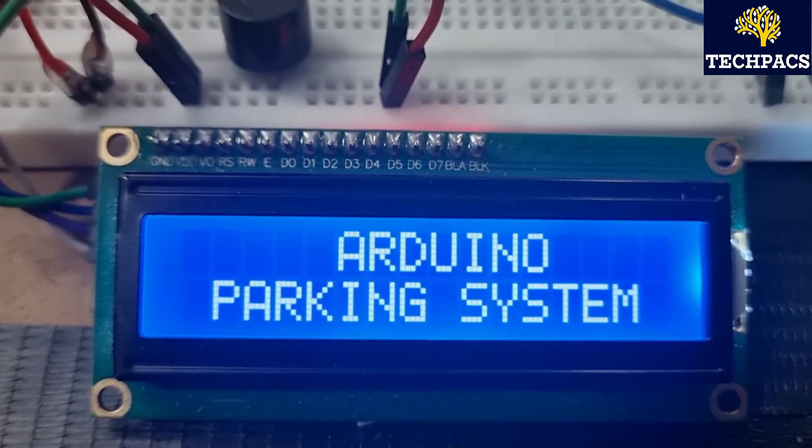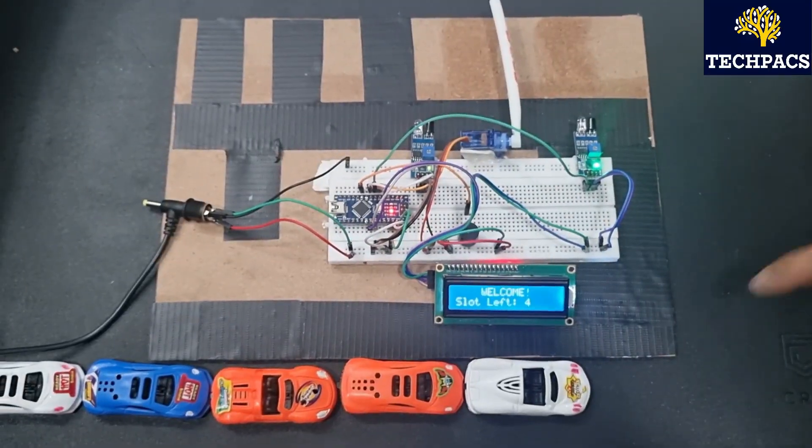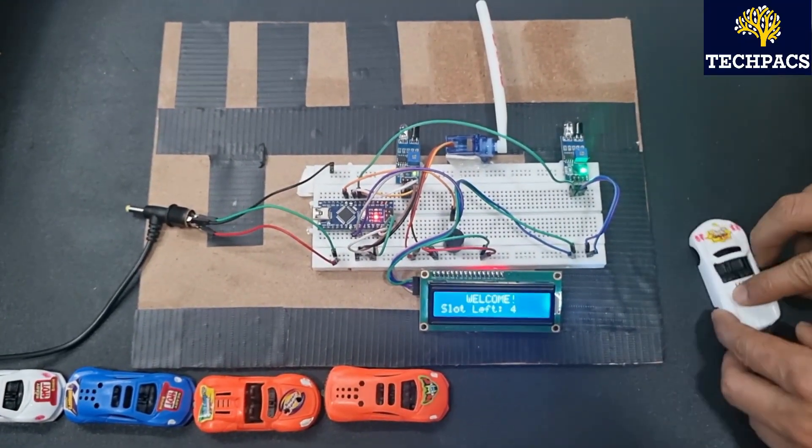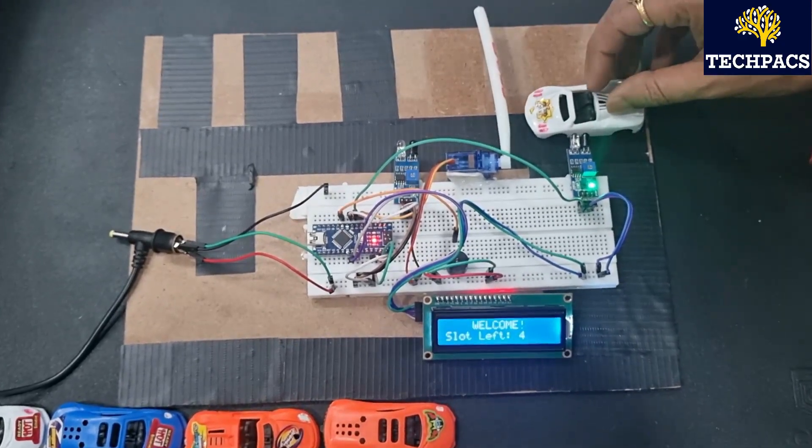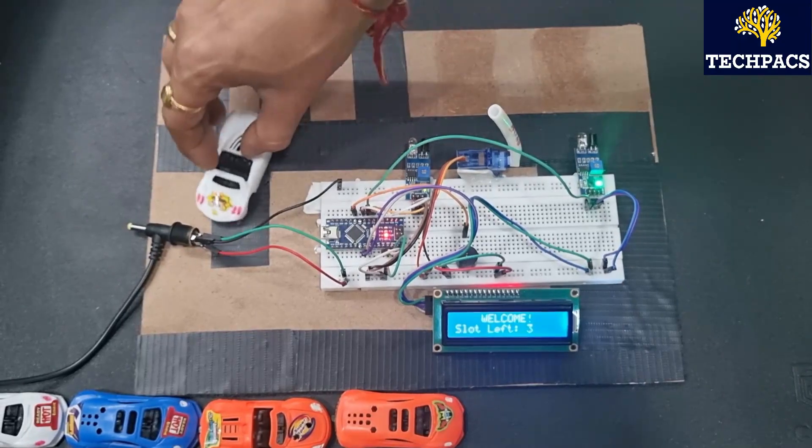Here you can see Arduino Parking System is being displayed. Welcome, slot left four. So here we have four slots available. Here you can see that the barrier opens as soon as a car is detected by the sensor. Here one car has been parked.